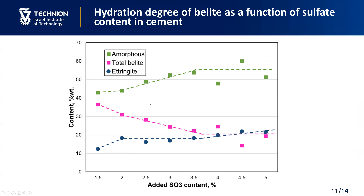At the second stage, which is the most interesting stage, the CSH gel grows as fast as the content of belite decreases, while ettringite content is constant. This may indicate that sulfates at this stage are not spent on the formation of ettringite, but rather are involved in the formation of CSH gel. At the third stage, after 3.5%, the amount of amorphous phase and belite is constant, and the amount of ettringite is slightly increased, which may indicate the consumption of sulfates for ettringite formation.